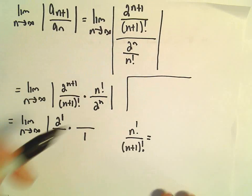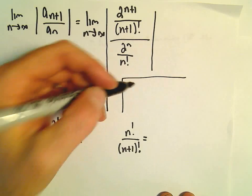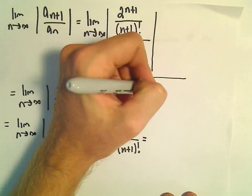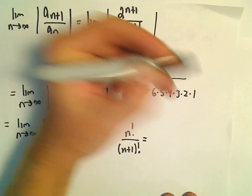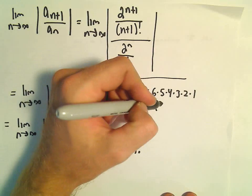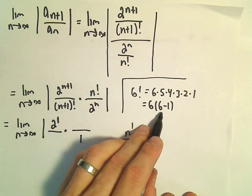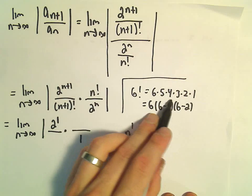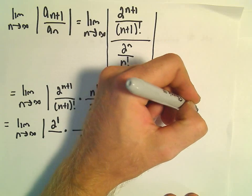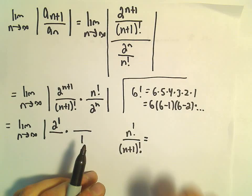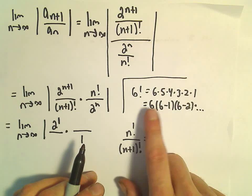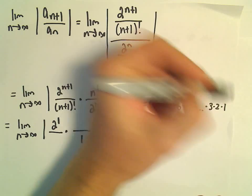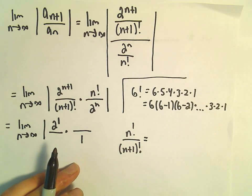Well, we're going to use this trick a lot, so let's talk about it at least once here. For example, say we had 6!. That's 6×5×4×3×2×1. We could write it as 6 times (6-1), which gives us 5, then (6-2), which gives us 4, and eventually we'll get down to 3×2×1, the tail end of the sequence.